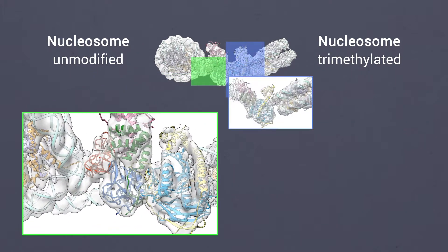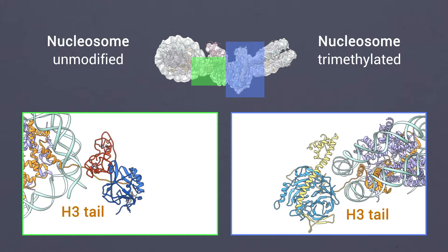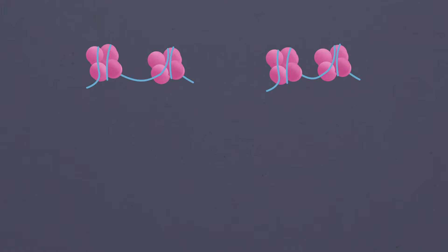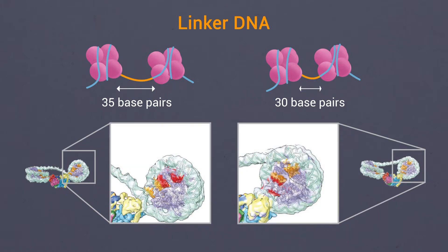The structures show how a single PRC2, via interactions with nucleosomal DNA, positions the H3 tails of the activating and substrate nucleosome to interact with the EED subunit and the SET domain of EZH2, respectively. We also show how the geometry of the PRC2-DNA interactions allow PRC2 to accommodate varying lengths of linker DNA between nucleosomes.